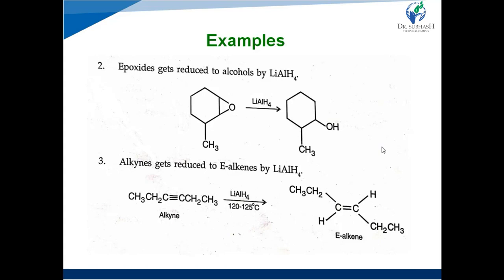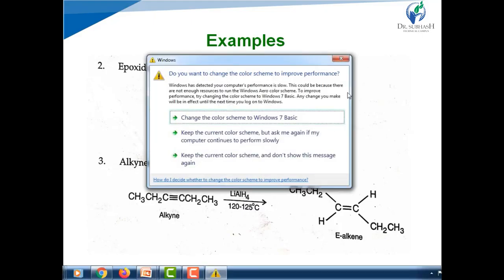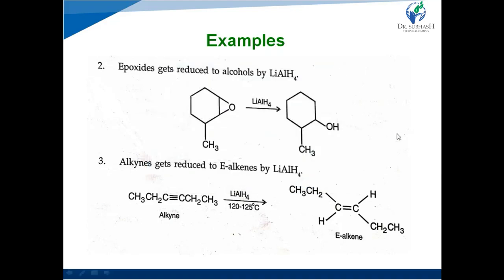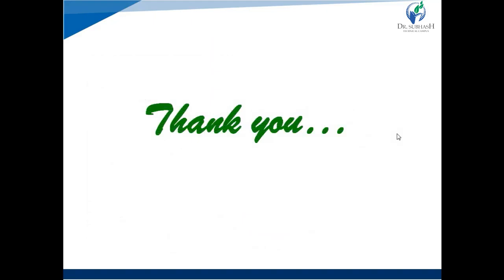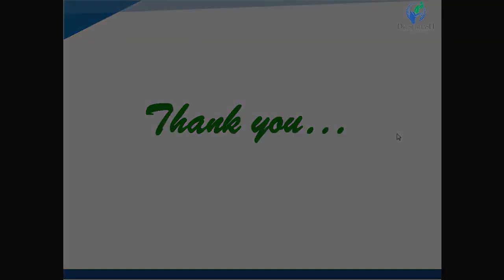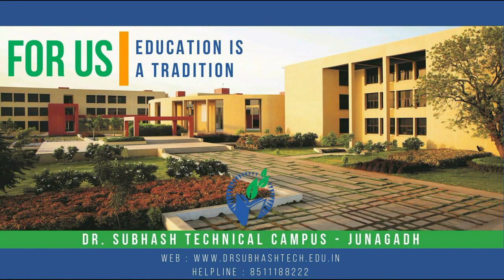The third point is that alkynes get reduced to alkenes — carbon-carbon double-bonded compounds. For example, 3-hexyne undergoes reduction with lithium hydride at 120–150°C and is converted into the corresponding alkene, 2-hexene, which produces the geometric isomers — specifically the E-isomer — by this reduction reaction. This metal hydride reduction has huge application in the synthesis of different types of medicinal compounds. Thank you.